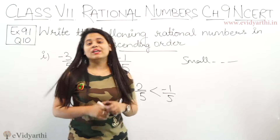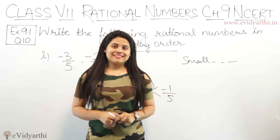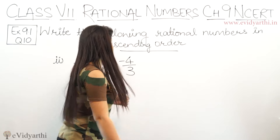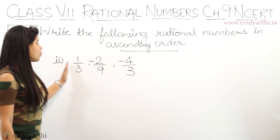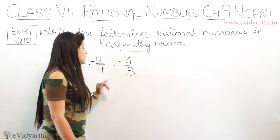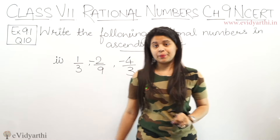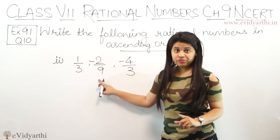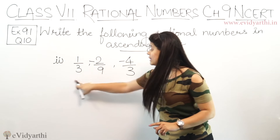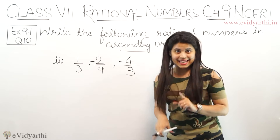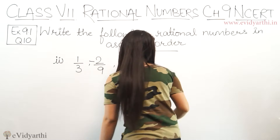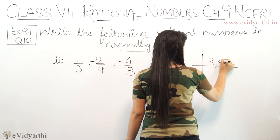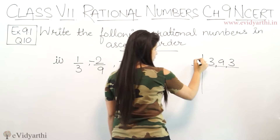So this was the first part, now let's come to the next part. Second part में ये numbers हैं: 1 upon 3, minus 2 upon 9, and minus 4 upon 3. दो का denominator same है, लेकिन एक different है. हमें इन तीनों का denominator same चाहिए, so for that हम इसका LCM लेंगे. So the numbers are 3, 9 and 3.